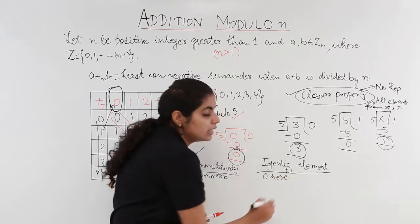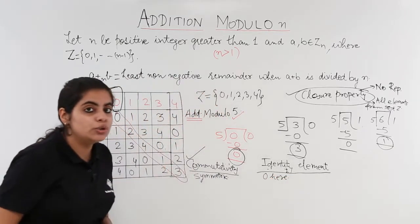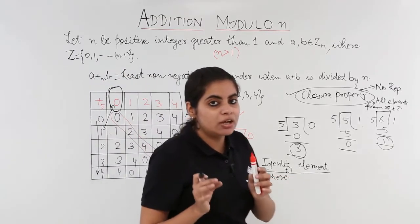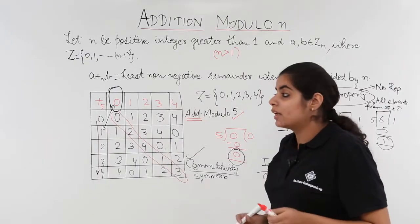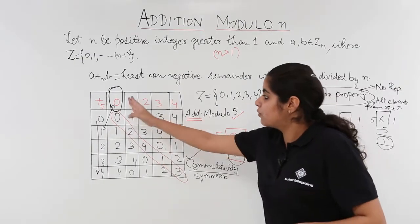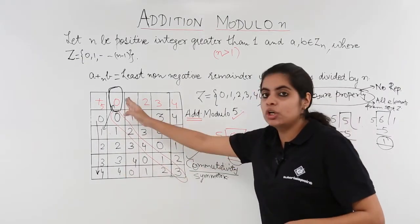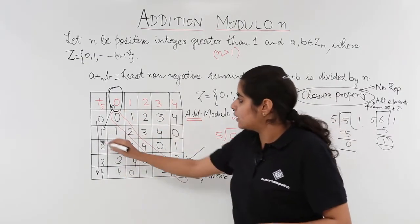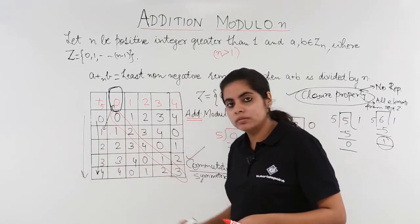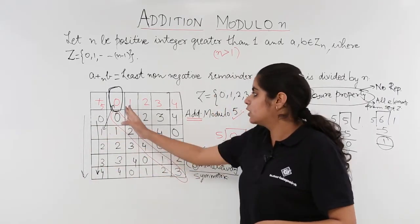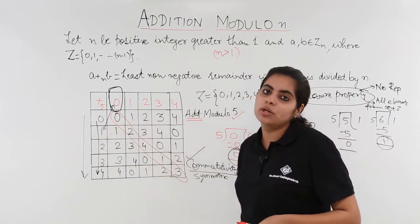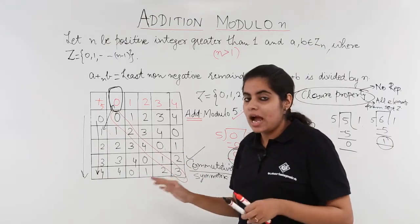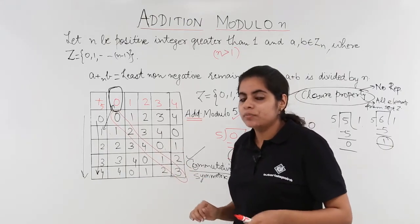To confirm the identity element, check the column under 0 as well — it also reads 0, 1, 2, 3, 4, matching the original set order. So 0 is the identity element both row-wise and column-wise.